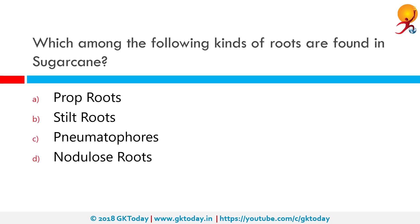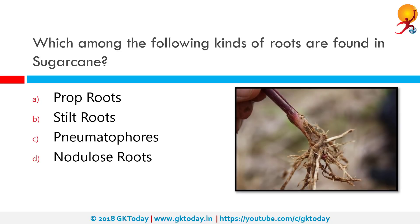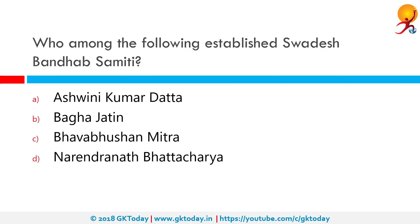Which among the following roots are found in sugarcane? In maize, sugarcane, and similar plants, roots arise from the first few nodes of the stems and penetrate obliquely down into the soil, giving support to the plant. These are called stilt roots.